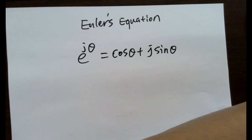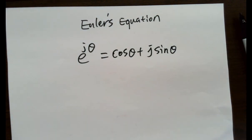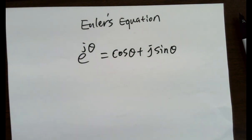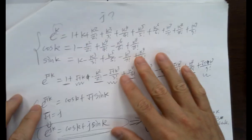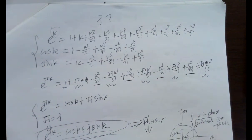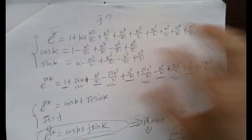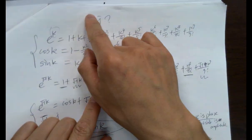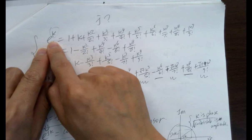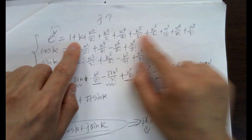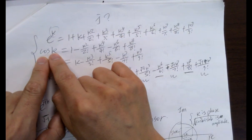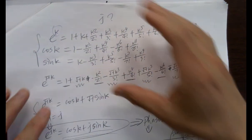I'm not deriving it — it would take 20 minutes. It comes from Taylor series. E to the k can be expanded in Taylor series. Cosine k can be expanded like this, and sine k can be expanded like this. If you merge them together, you find that E to the power of sqrt(-1)·K equals cosine k plus j·sine k. That's where J comes from.